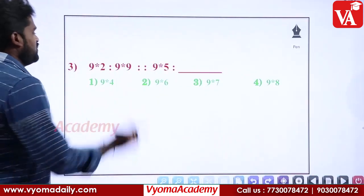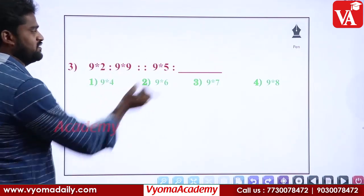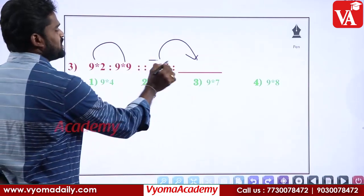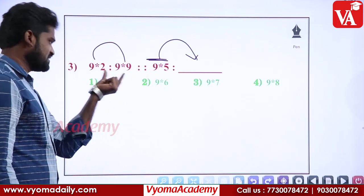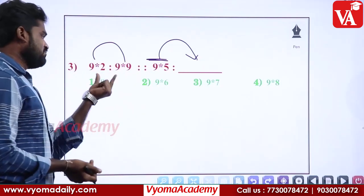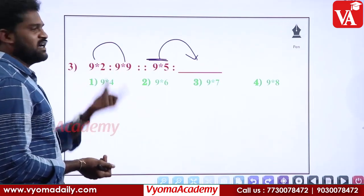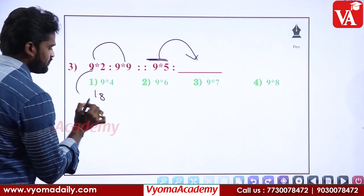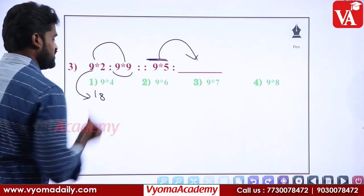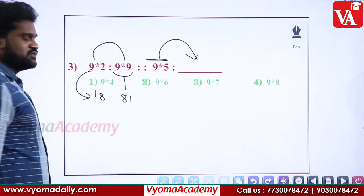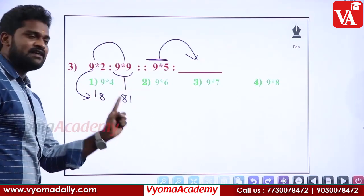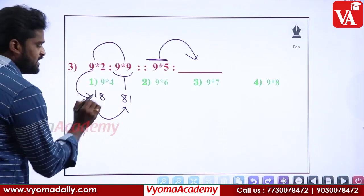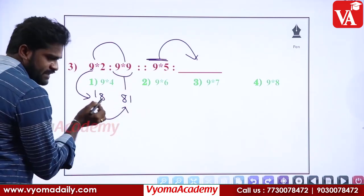Again an analogy question with numbers. 9 and 2: 9×2=18. 9 and 9: 9×9=81. The concept is: 9×2=18, and 18 reversed is 81. So 9×9=81, and 81 reversed is 81 — same. Now next question: 9 and 5: 9×5=45. Similar to 18 reversed being 81, 45 reversed is 54. So the answer is 54.